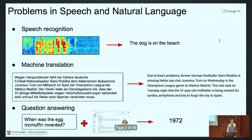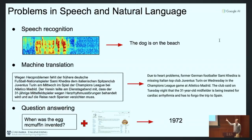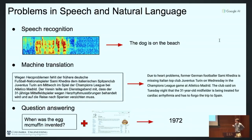I'm going to talk about successes in natural language processing, covering a few neural architectures and highlighting several interesting questions that arise from them. Problems in speech and language include speech recognition — transforming an acoustic sequence shown as a spectrogram into a sentence — machine translation from one language to another, and question answering, where given a question and a Wikipedia page or the entire web, we want to return an answer.